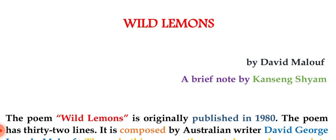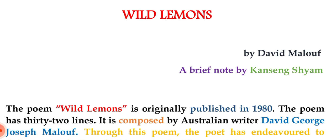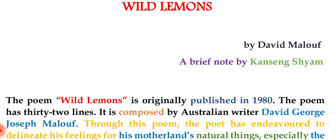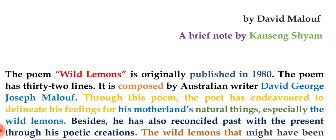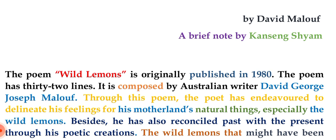The poem Wild Lemons was originally published in 1980 and written by Australian writer David Jers and Joseph Maloof. The poem consists of 32 lines. Through this poem the poet has endeavoured to depict his feelings for his motherland and its natural things, especially the wild lemons — wherever he goes, that thing still reminds him of his own country and gives him pleasure. He has also reconciled the past with the present through his poetic creations.